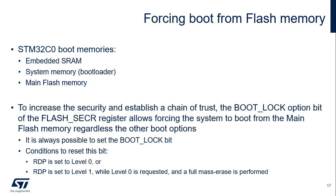In the STM32C0, three different boot modes can be selected: boot from embedded SRAM, boot from system memory, and boot from main flash memory. Executing a secure boot from securable memory implies that the boot area is the flash memory. To disable the other boot areas, the boot lock option bit has to be set in the flash SEC_R register. It's always possible to set the boot lock bit; however, resetting it is possible only when RDP level is 0, or when RDP is changed from level 1 to level 0, which causes the mass erase.